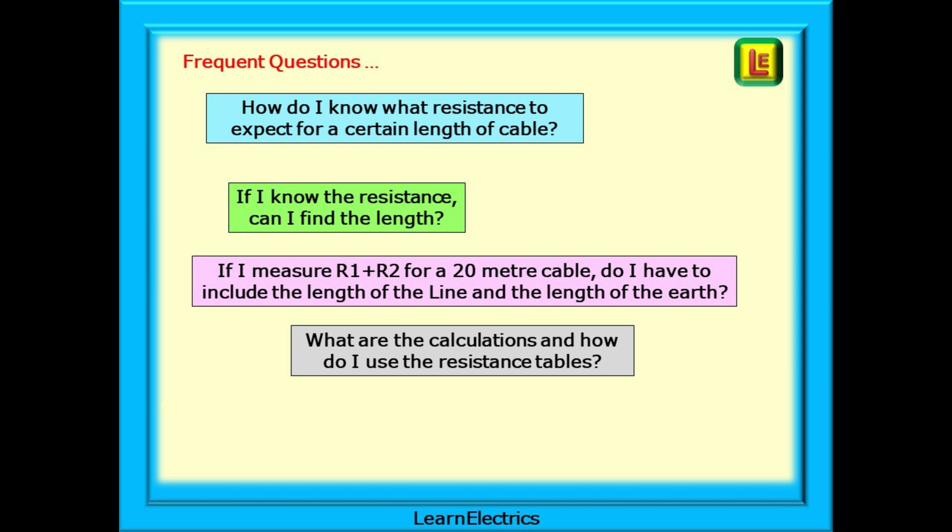Some of the frequently asked questions have included: How do I know what resistance to expect for a certain length of cable? If I know the resistance can I find the length? If I measure R1 plus R2 for a 20 meter cable do I have to include the length of the line and the length of the earth in the calculation making it 40 meters? In fact what are the calculations and how do I use the resistance tables?